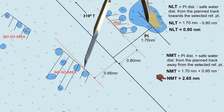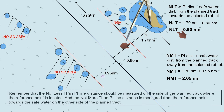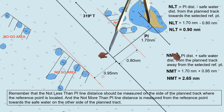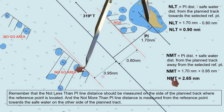Always remember that the not-less-than PI line distance should be measured on the side of the planned track where the reference point is located. And the not-more-than PI line distance is measured from the reference point towards the safe water on the other side of the planned track.